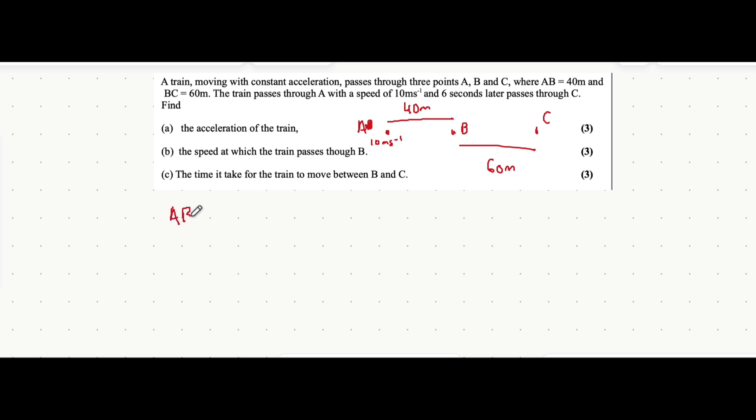It's giving you information for each section, plus that the whole journey from A to C is six seconds long. Let's fill in all the SUVAT variables we have so far. This is going to help us do parts a, b, and c of this question because we're going to have all our information already laid out.